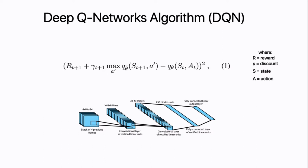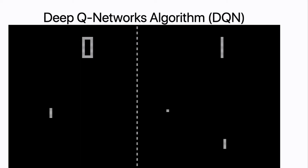Over at the bottom, you'll see how this works: the four previous frames are put through several layers which in the end give you a Q value. So let's go for an example — this classic game, which is Pong.